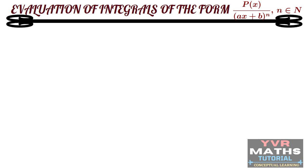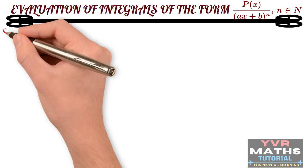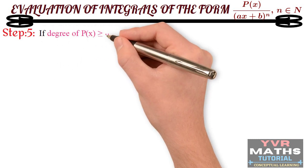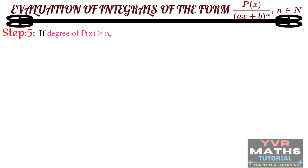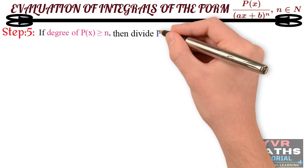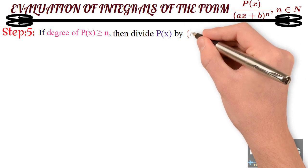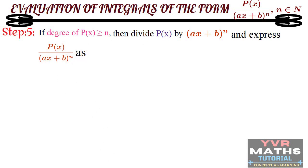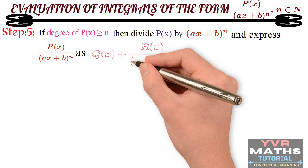What is the second case? If the degree of P is greater than or equal to n, then how do we evaluate the integration of the given integrand? This is the concept we are going to learn in this class. See here — Step 5. The first four steps were discussed in the previous class. Now, Step 5: if the degree of P(x) is greater than or equal to n, then divide P by (ax+b)^n and express P(x)/(ax+b)^n as Q(x) plus R(x)/(ax+b)^n.